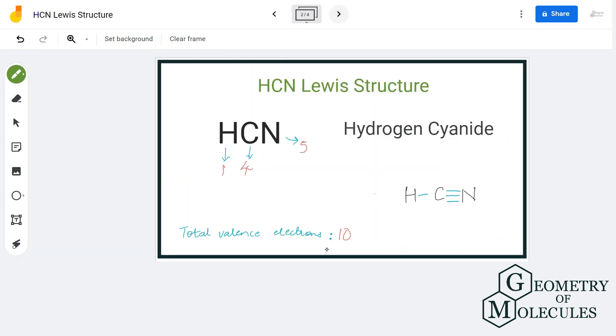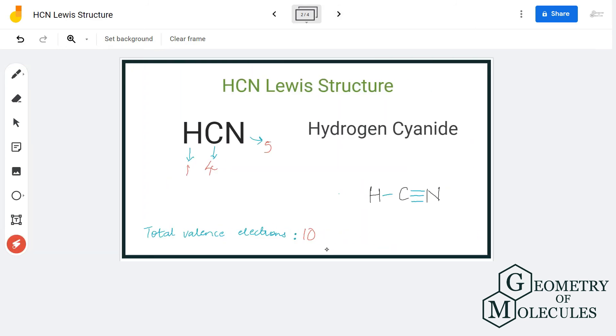Now we shall again count the number of valence electrons for each atom. Hydrogen has two, carbon has eight, and even nitrogen has eight. So this is the Lewis structure for hydrogen cyanide in which hydrogen and carbon have a single bond and there is a triple bond between carbon and nitrogen.